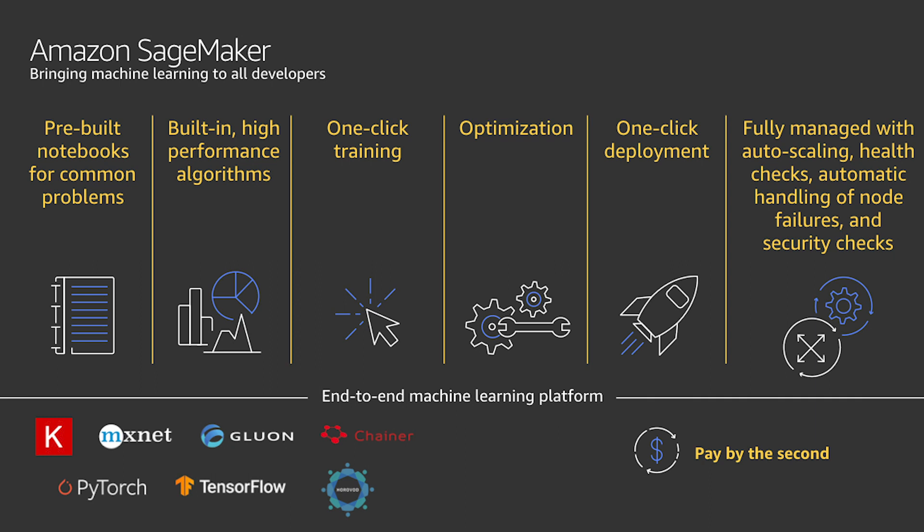Now that you know what G4 instances are used for and their specs, how do you get started? For machine learning inference, G4 instances are integrated with Amazon SageMaker, enabling quick access through an easy-to-use workflow interface.